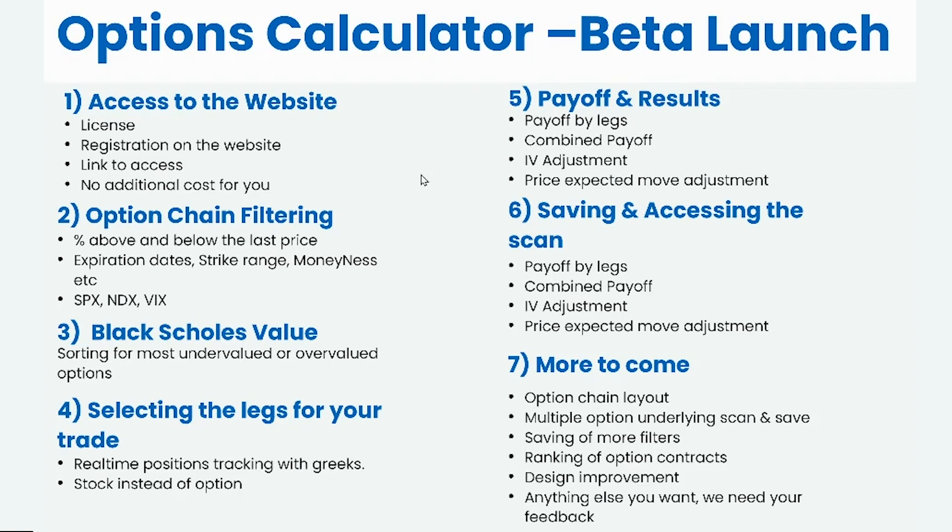So what we are going to talk about is how do you access the calculator, how do you filter the option chain by looking at the percentage above and below the last price, filter the chain by expiration dates, strike range, moneyness, how do you do the option chain for indices, the Black-Scholes value calculations, selecting the legs of your trade, viewing the results, the payoff until expiry, adjusting the implied volatility, and saving and accessing the scan and exporting options from the calculator.